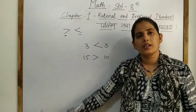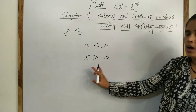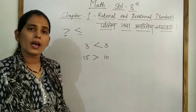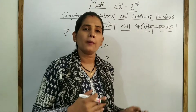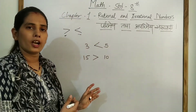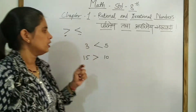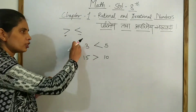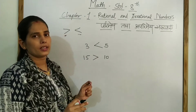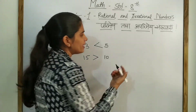The sign's direction always points toward the smaller number. We have done the positive number comparison. Now we will see comparison with negative numbers.